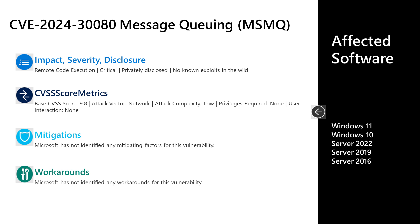That's not quite a mitigation, but definitely something to point out. With no privileges required and no user interaction, some folks ask whether this is wormable — can this be spread across the internet with no actions required on a user's part? That's not quite the case here. In order to be vulnerable, a server or system would have to have that message queuing service enabled. To exploit this vulnerability, an attacker would need to send a specially crafted packet to a message queuing service server, which could result in remote code execution on the server side. As far as affected software, it's all versions of Windows that are in mainstream support, whether that's Windows 10 and 11 on the desktop side, or Server 2016, 2019, or Server 2022 on the server side.